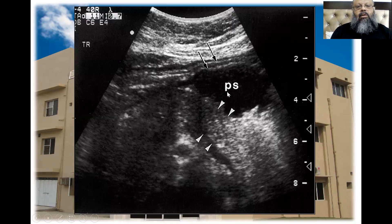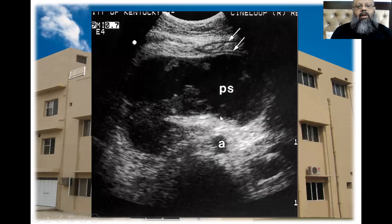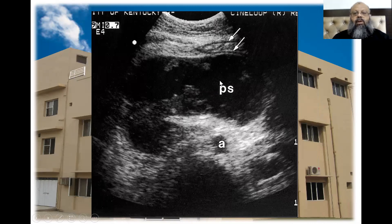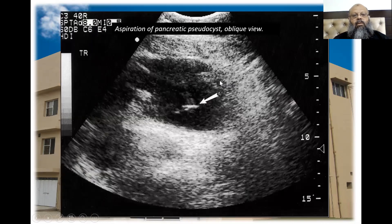This is a pseudopancreatic cyst, usually found anterior to the body of the pancreas. It seems as if it is originating from the pancreas, but it is actually a fluid collection in the lesser sac — fluid in the lesser sac, which is the pseudopancreatic cyst.